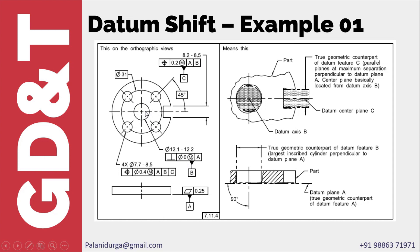When you have a part like this, after manufacturing, whatever may be the hole size, there will be an expanding mandrel and the part will be held with that expanding mandrel to get the actual mating envelope. When we get the actual mating envelope, we derive the datum axis, and based on that datum axis we check the slot width position.